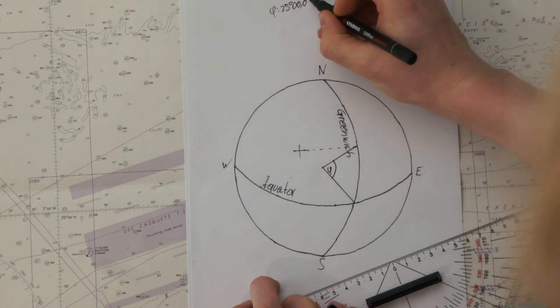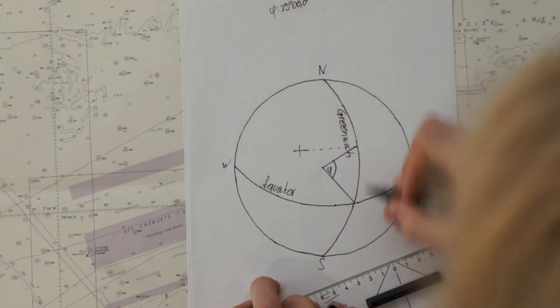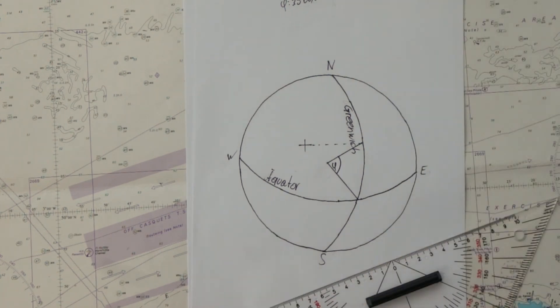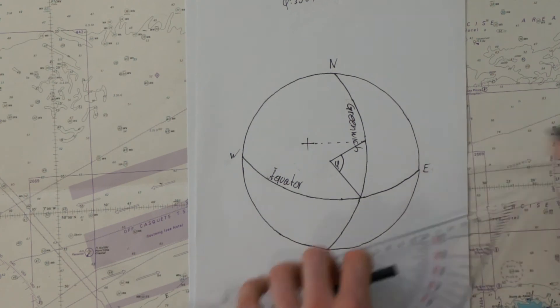And to the north of the equator, so north. Then, the next step is the longitude. It's exactly the same process, but not vertically, but horizontally.